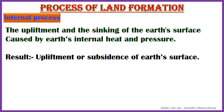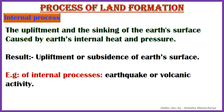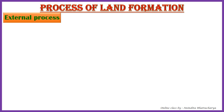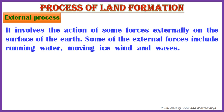The result of the internal process is the upliftment or subsidence of the earth's surface. Examples of internal processes include earthquakes and volcanic activity. Examples of landforms formed by internal processes are mountain ranges.